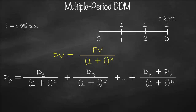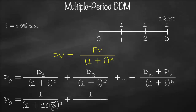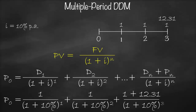Applying the formula to our example: we have dividends for three years and sell the share at the end of year three. Using the PV of single cash flow formula three times: P0 = 1/(1+10%)^1 + 1/(1+10%)^2 + (1 + 12.31)/(1+10%)^3. This gives us a share price of $10.